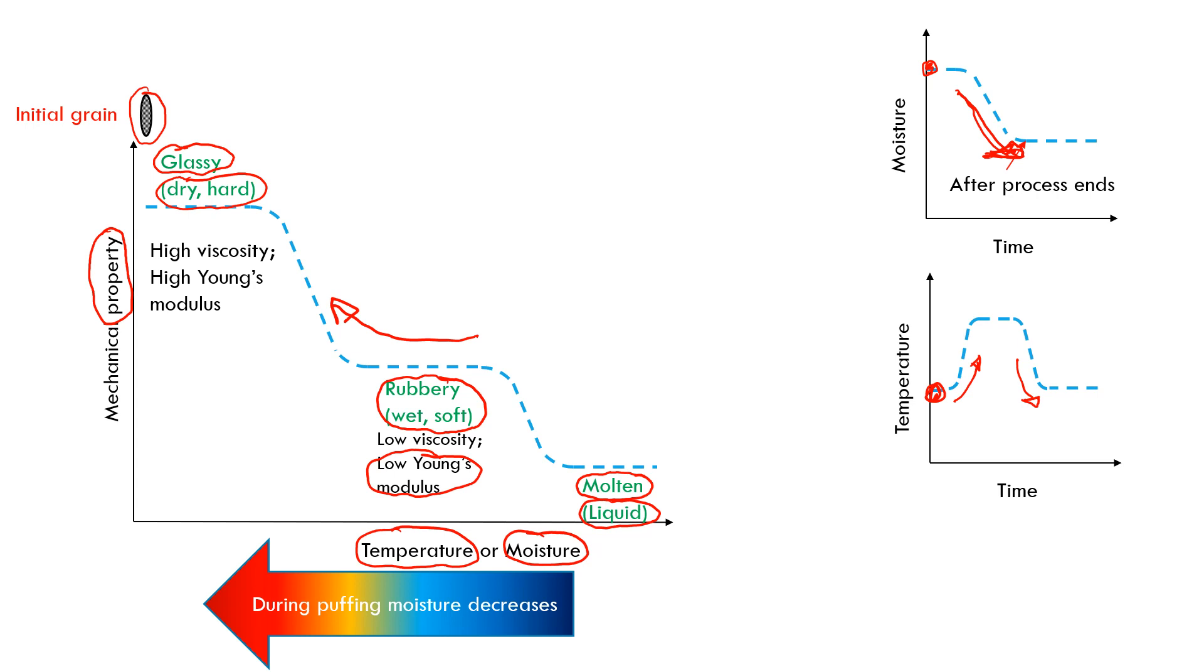In the process, the moisture keeps going down. As the moisture keeps going down, it becomes closer and closer to the glassy state, so it moves this way. Its Young's modulus increases. As the moisture is at a real low, there's no more moisture to evaporate, we stop the puffing process. It is cooled, so now we are into this glassy, hard state.